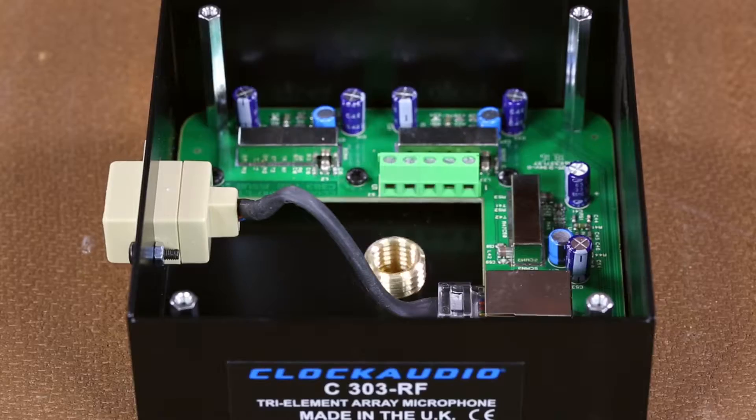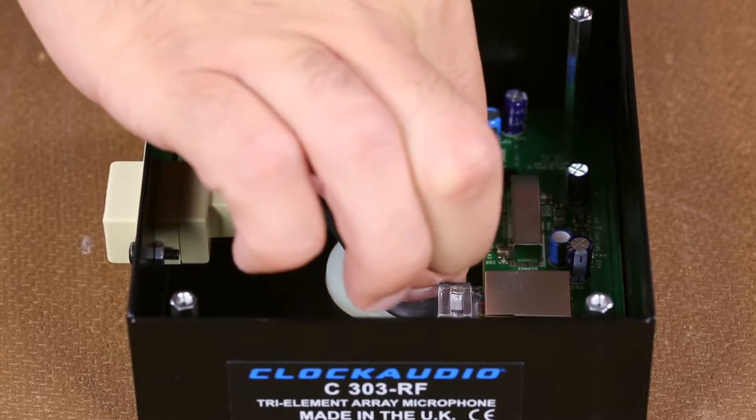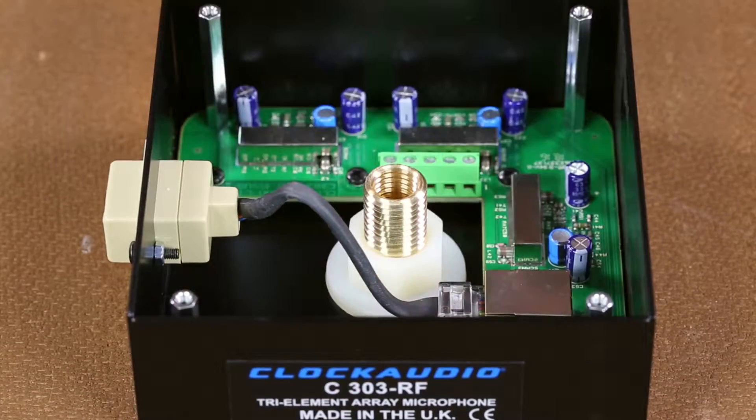Next, insert the threaded part of the cable gland through the 5/8 of an inch hole in the ceiling and bottom of the enclosure. Hand-tighten the flange nut to secure the enclosure to the ceiling.